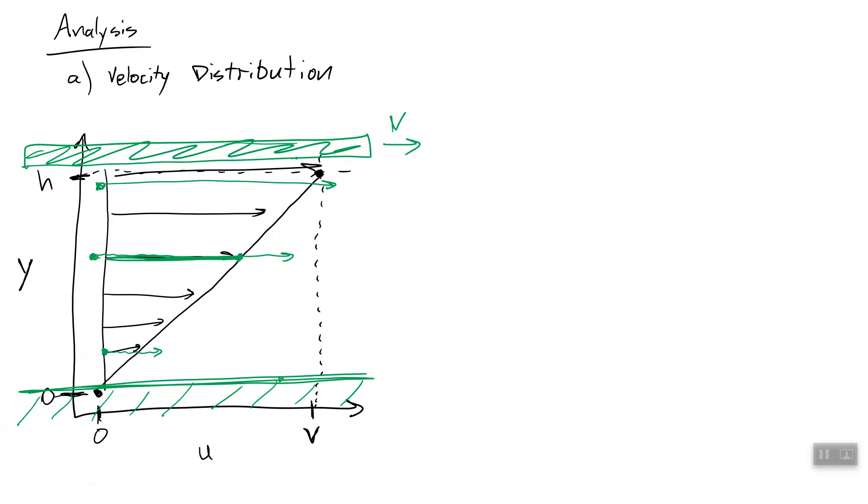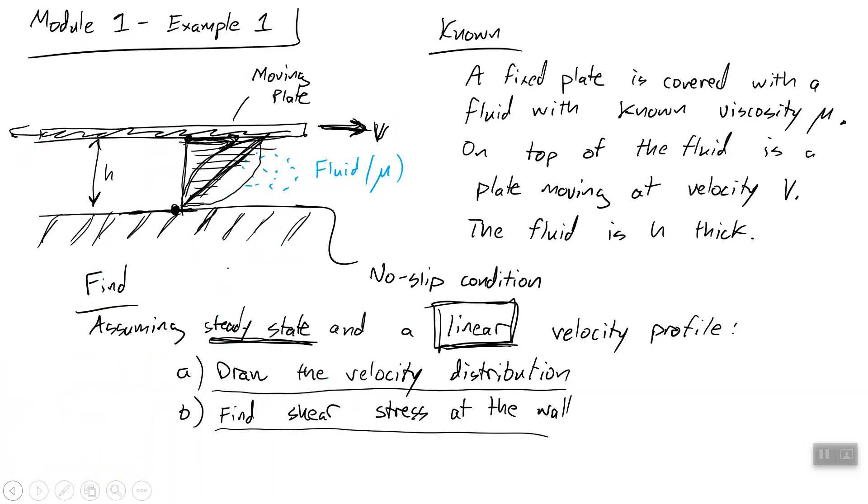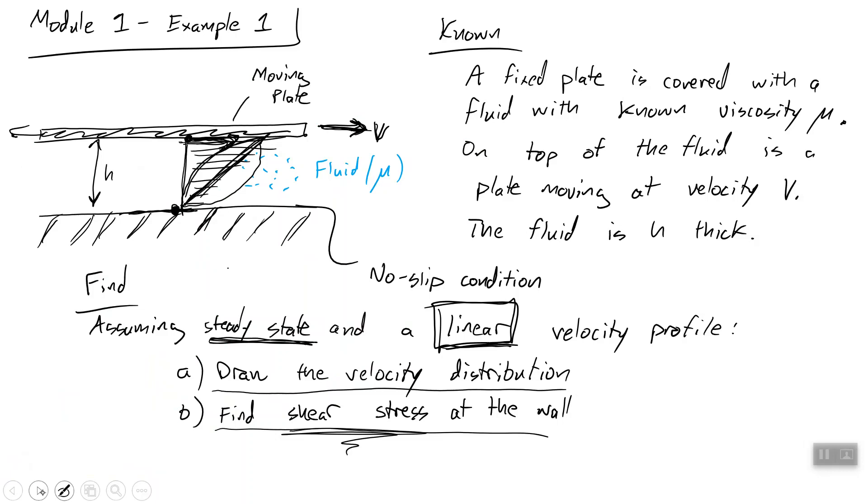Now, part B asks us to find the shear stress at the wall. In order to do that, we're going to use Newton's law. But to use Newton's law, we need to find a derivative. And I wanted to redraw this plot a little bit different. Instead of y as the vertical and u as the horizontal, I'm going to do u as the vertical axis and y as the horizontal axis.